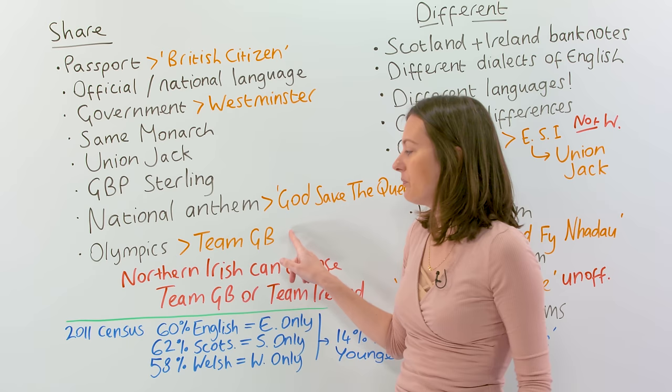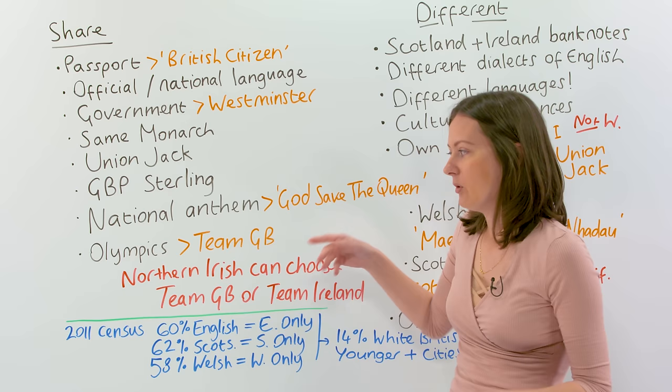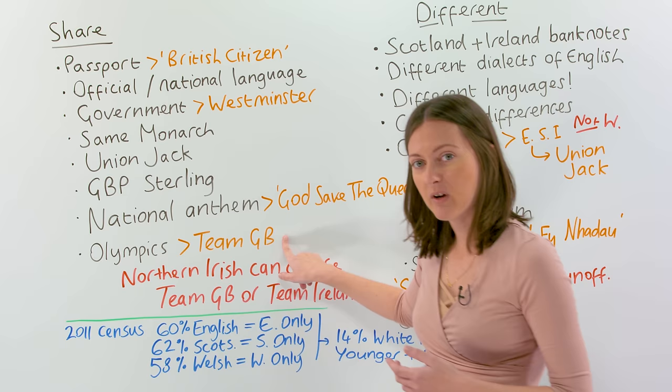This is an unusual choice of name for the Olympic team, because Great Britain doesn't include Northern Ireland. So where do Northern Ireland compete in the Olympics? Well, they can choose to be part of Team Great Britain, or they can choose to be in Team Ireland if they want — so they get a choice.